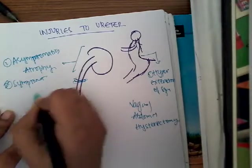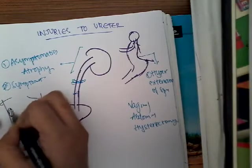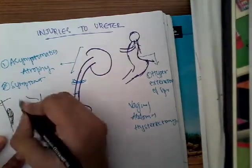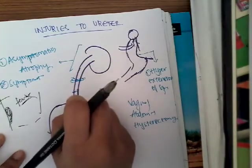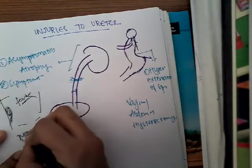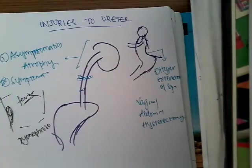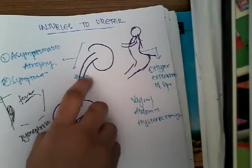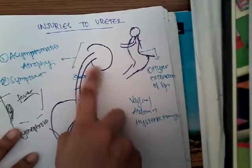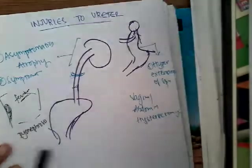Sometimes the patient can be symptomatic. They can have loin pain or fever. In severe cases, the obstructed system can get infected, leading to pyonephrosis. And sometimes it can be a very late presentation where the patient develops a urinary fistula, because the dilated system can break and cause urinary fistulas. All these can be the symptoms if there is a unilateral injury.